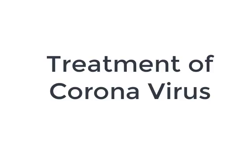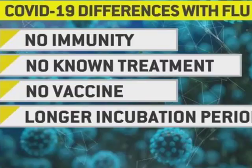Now let's talk about the treatment of coronavirus. There is no specific treatment and no specific vaccine for coronavirus till date, but scientists are doing research. They are thinking that if we get antibodies from cured patients of coronavirus disease, we can make vaccines from those.